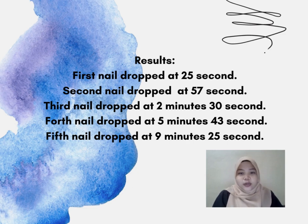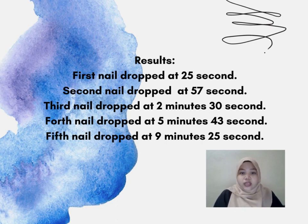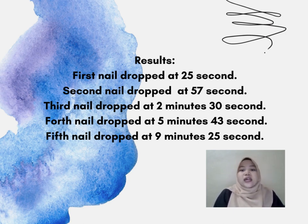To conclude the experiment, this type of transfer of heat from one place to another in a material is called conduction. This experiment shows how steel conducts heat — the end of the steel ruler got hot rather than the entire ruler heating up equally. The first nail dropped at 25 seconds, the second at 57 seconds, the third at 2 minutes 30 seconds, the fourth at 5 minutes 43 seconds, and the last at 9 minutes 25 seconds. This result was based on where the candle was placed. If placed in the middle of the ruler, heat would start in the middle and extend outward in either direction.